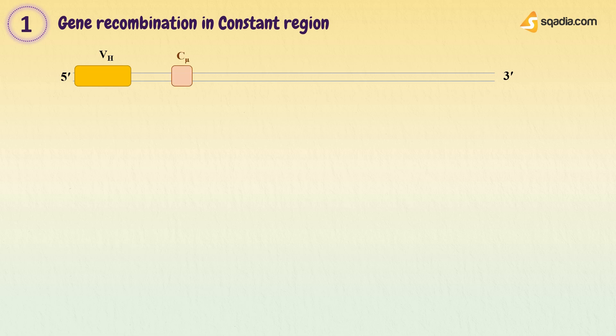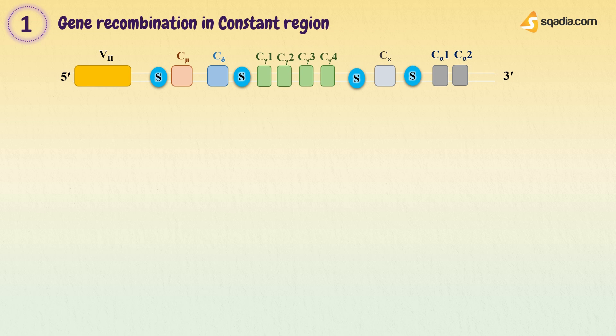In constant region genes of heavy chain, constant region exons for IgM that is mu, delta for IgD, gamma for IgG, epsilon for IgE, and alpha for IgA subtypes are present. There are also some other regions that are named as switch regions, or S-regions. S-regions are repetitive DNA sequences that are found upstream of each CH exon, except C-delta.